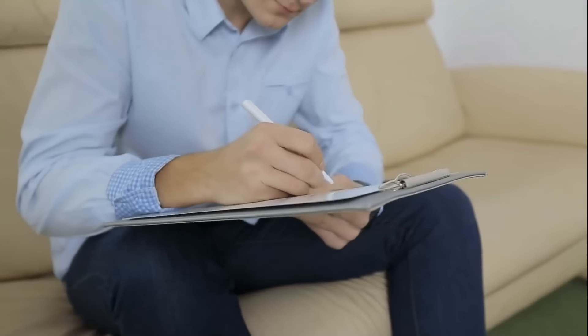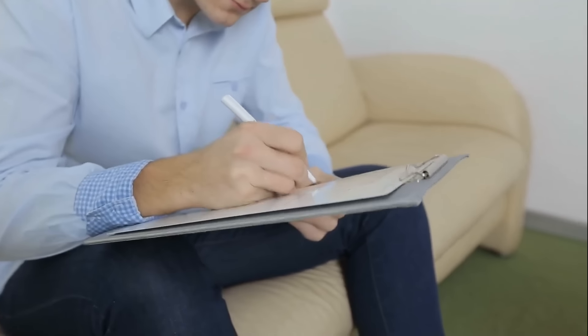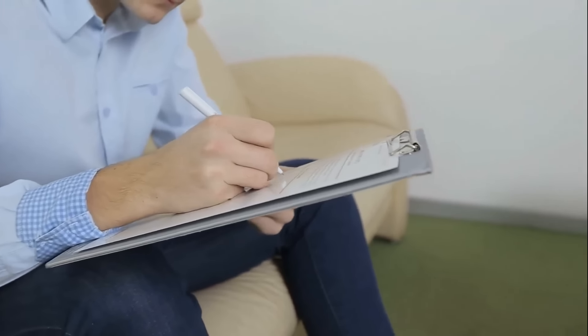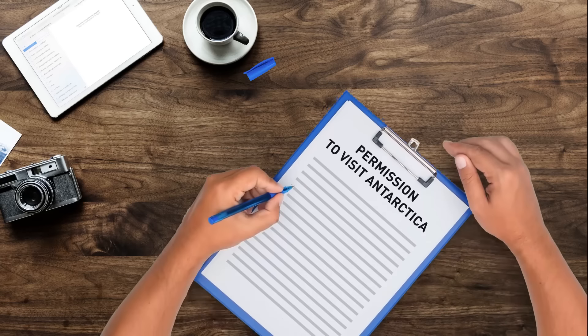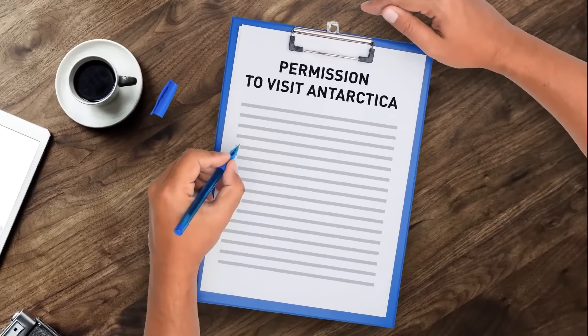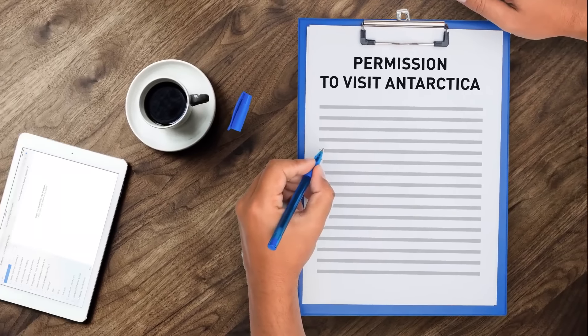If you're still itching to go to Antarctica, getting permission isn't exactly a walk in the park. U.S. citizens, for example, need to complete a special form and send it to the Office of Ocean and Polar Affairs.